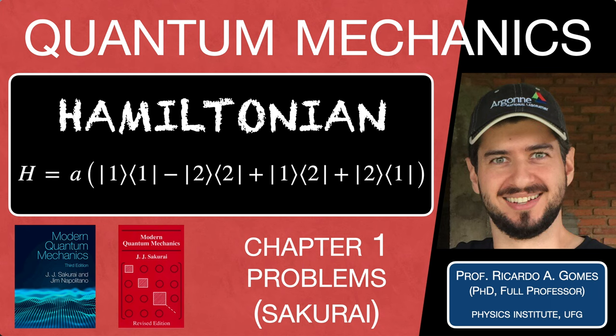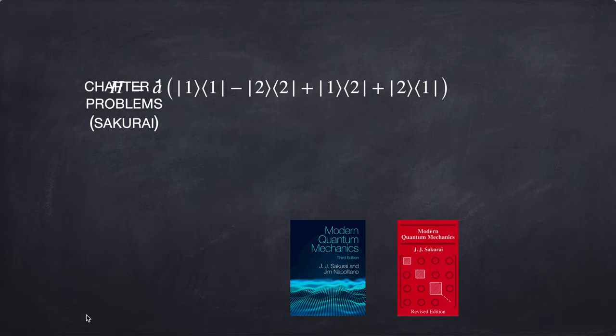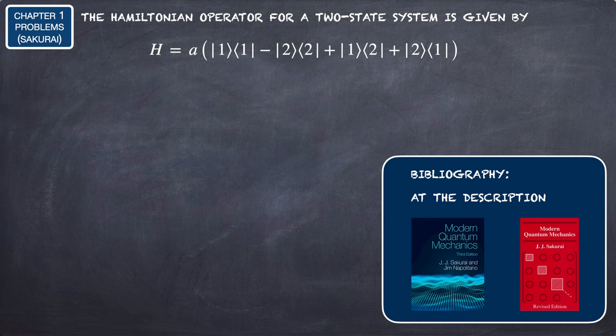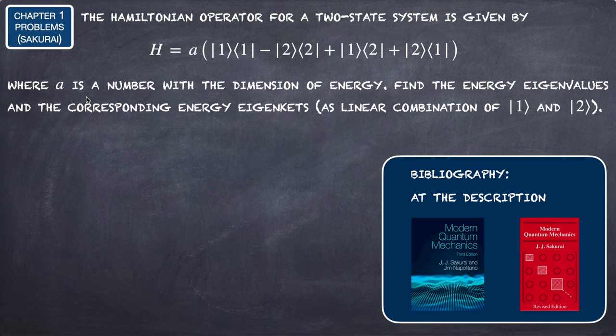Hello everyone, I'm Professor Ricardo, and in this video we are going to solve a quantum mechanics problem. The Hamiltonian operator for a two-state system is given by a multiplying the projectors |1⟩⟨1| minus |2⟩⟨2|, plus |1⟩⟨2| plus |2⟩⟨1|, where a is a number with the dimension of energy. Find the energy eigenvalues.